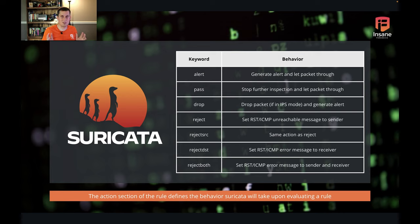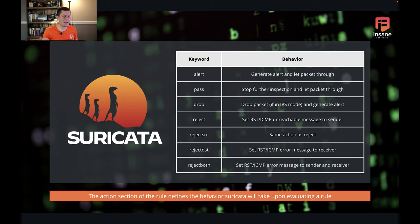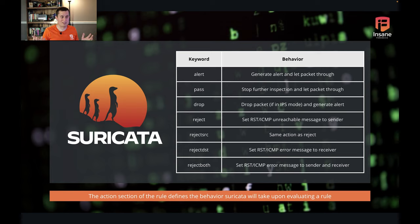The action section defines what happens when Suricata matches a rule. You're going to see different behavior if you're in detection mode versus prevention mode. In detection mode, a lot of times you might be off a span or tap port, but you're not in line to actually impede the flow of traffic. In prevention mode, you have the ability to stop the packet from getting to the destination, send resets, and more. Starting with alert: if you set alert as the action, it's going to generate the alert and let the packet through if in prevention mode.